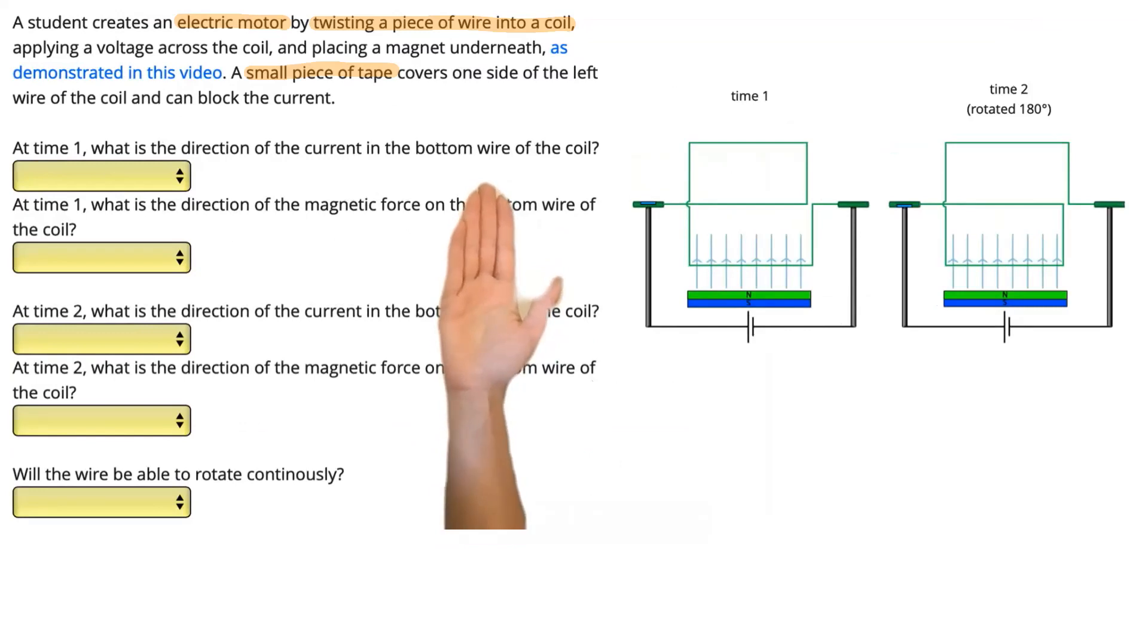The current flows out of the long positive part of the battery, so it's going to the left when it comes out of the battery. It then travels up and around so that it's going to the right as it goes through the field.